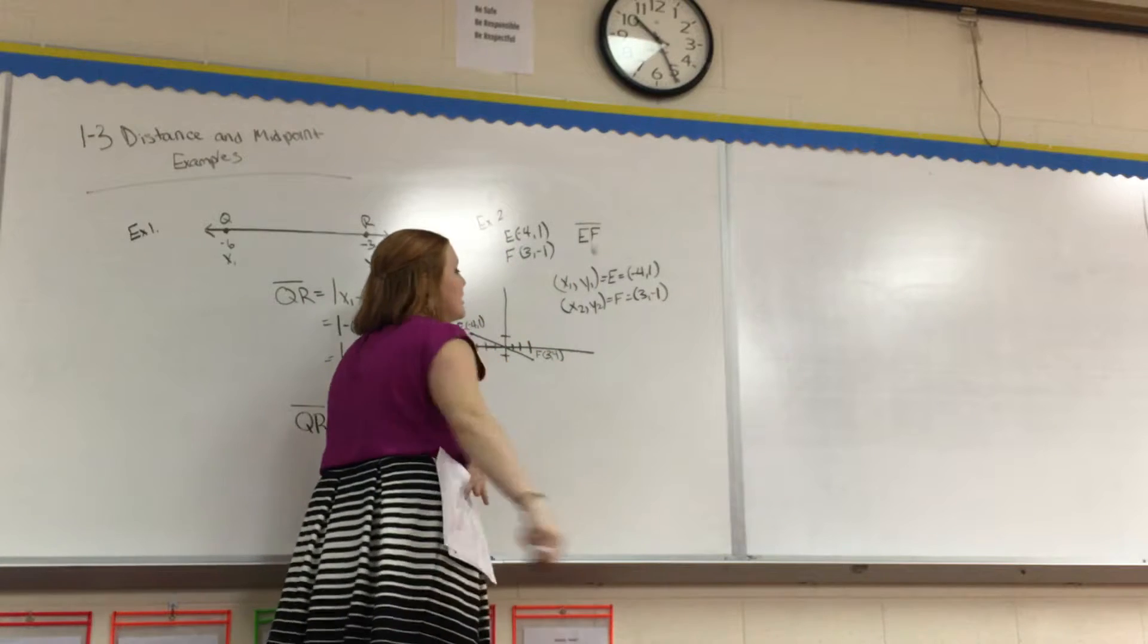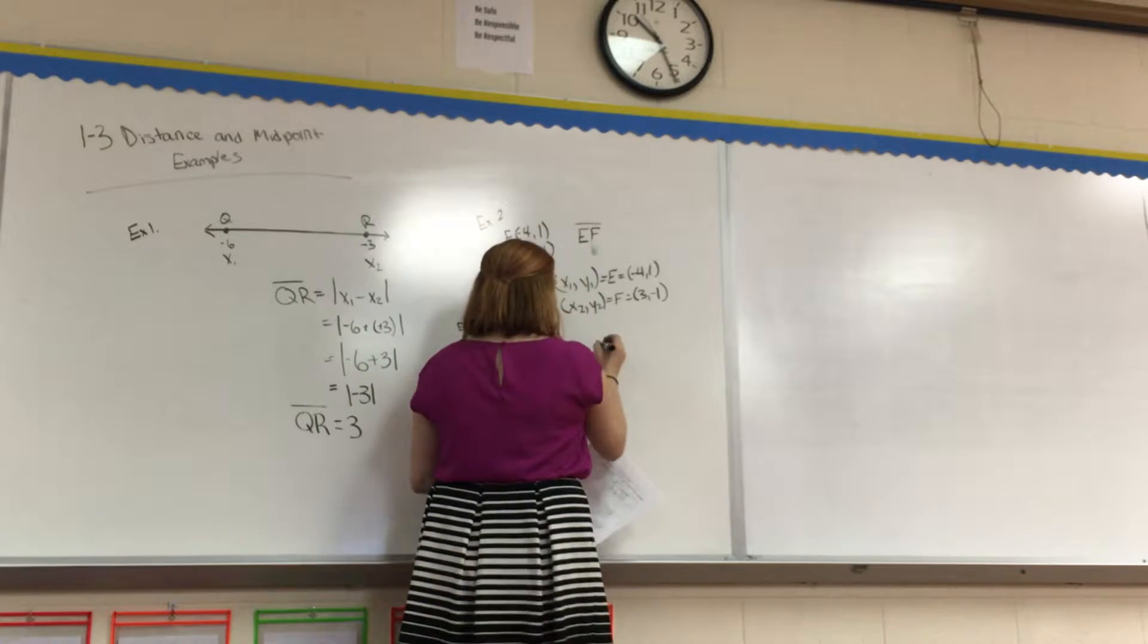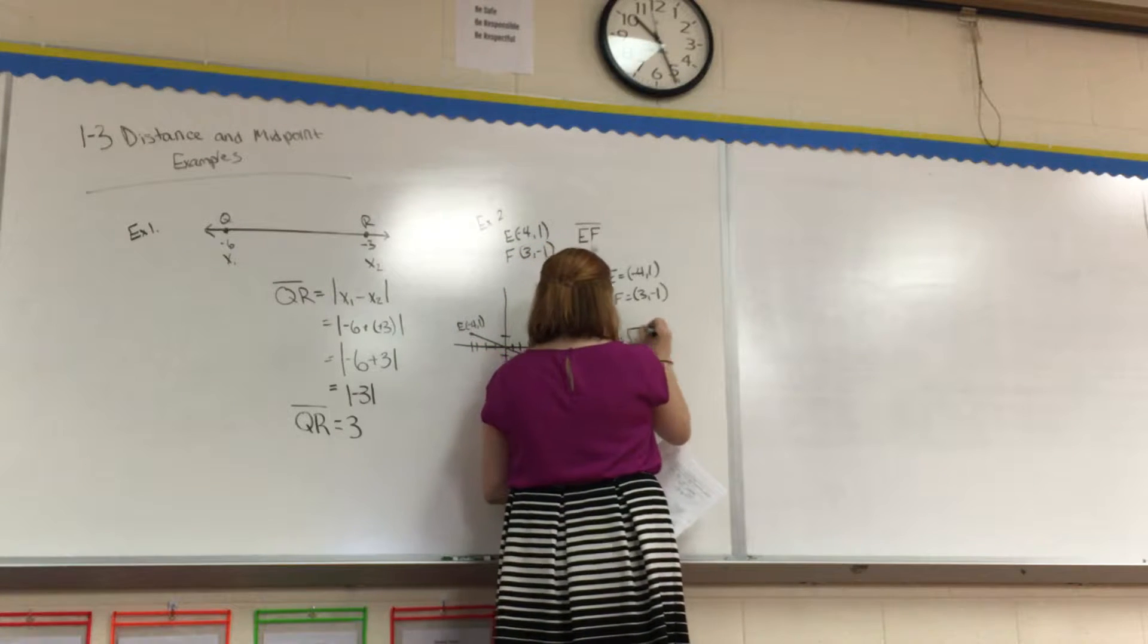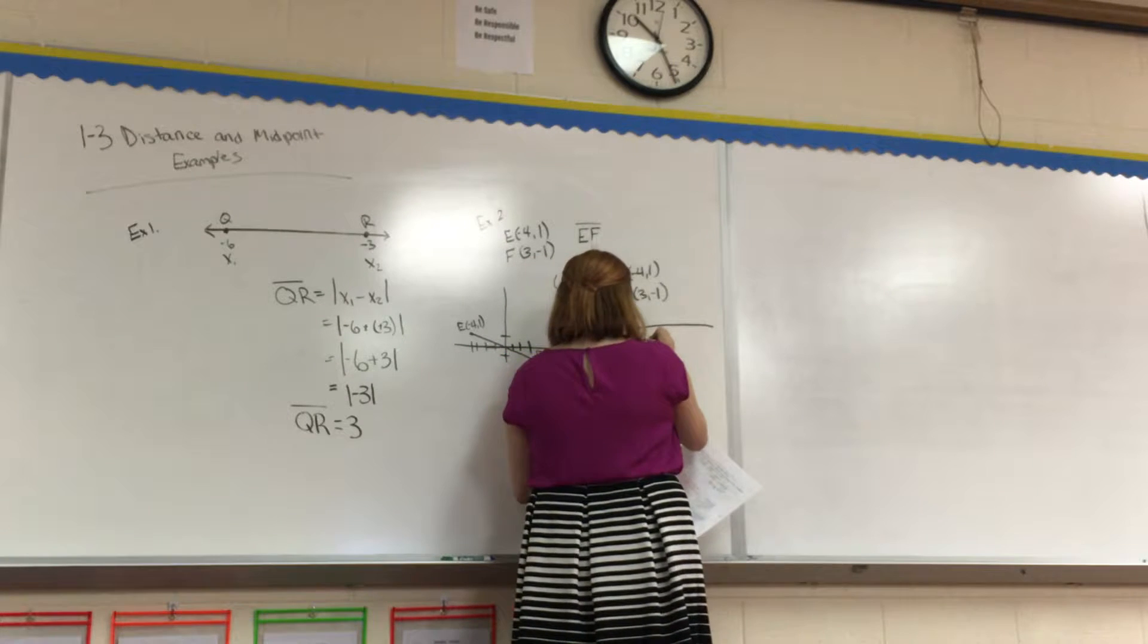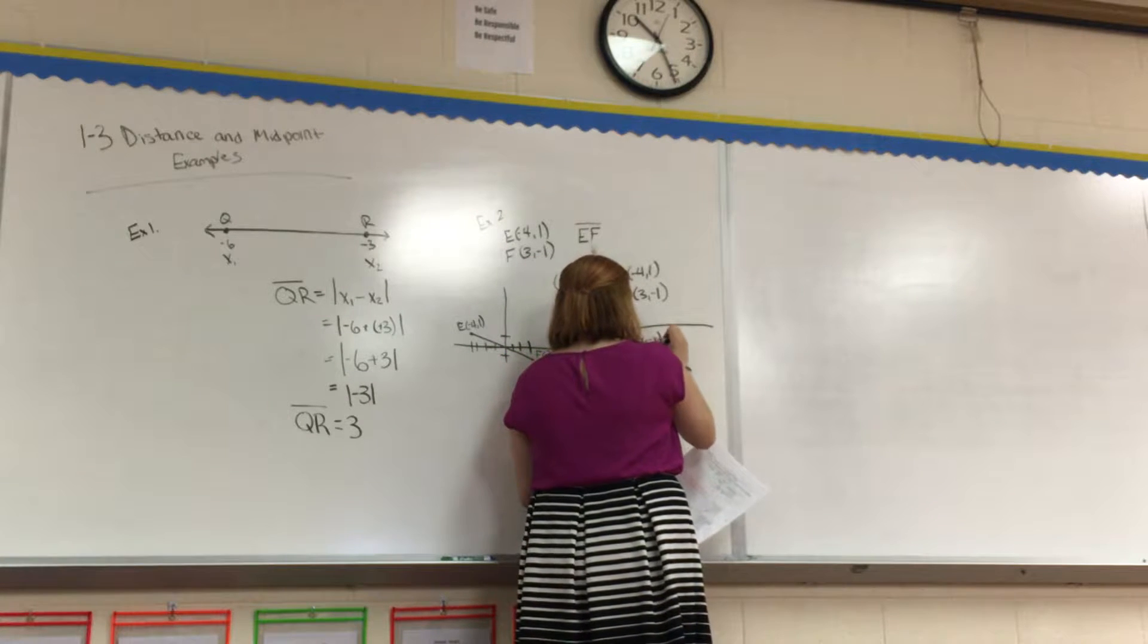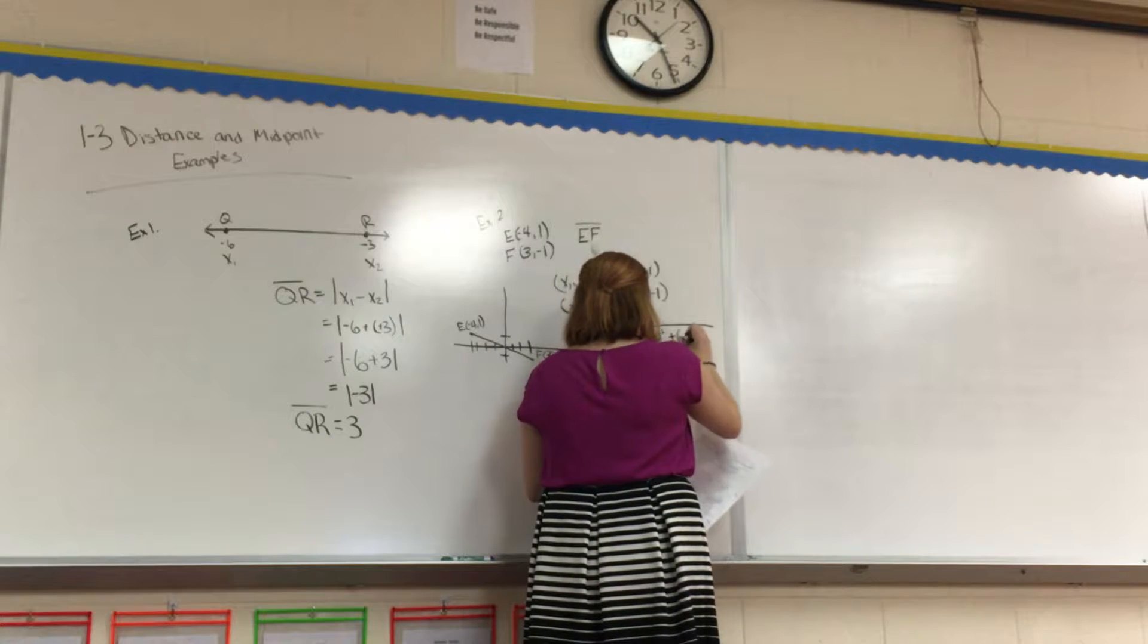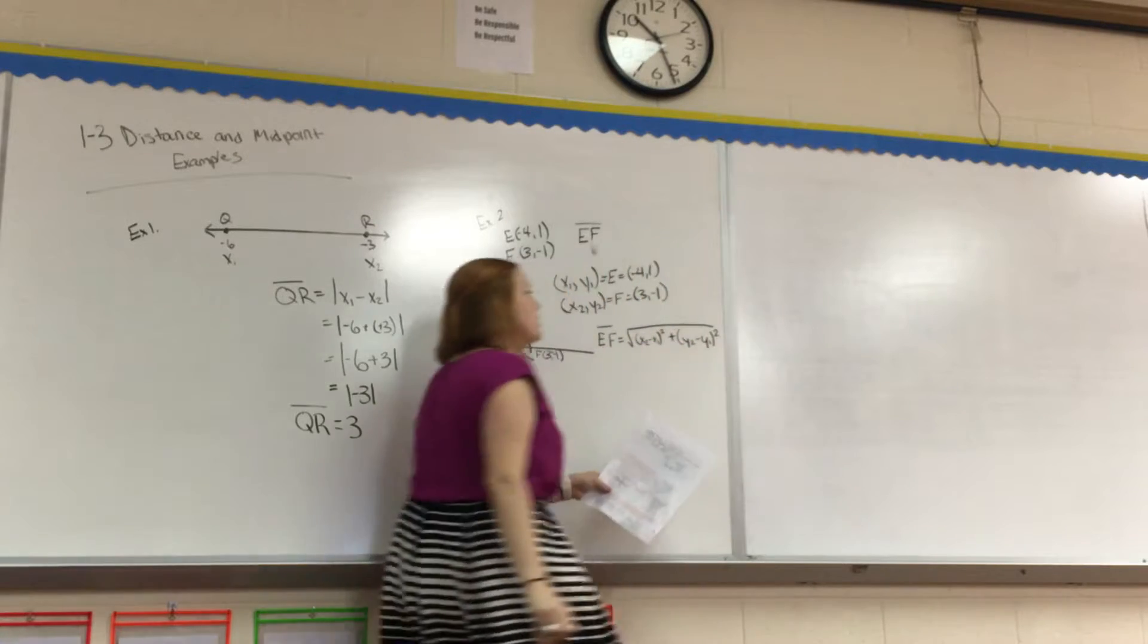The reason I write it like this is because we are going to use our distance formula. So that distance formula is the square root of X2 minus X1 squared plus Y2 minus Y1 squared. So that's our formula.